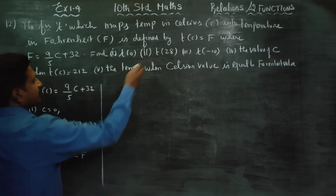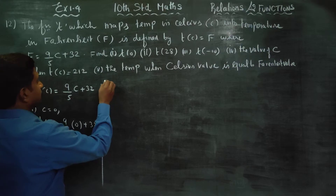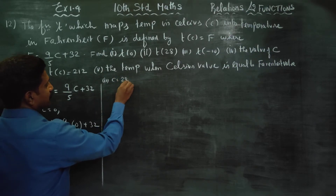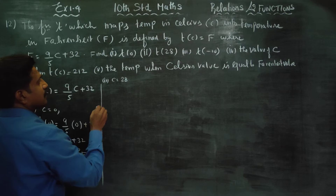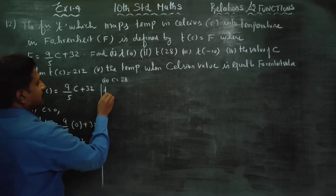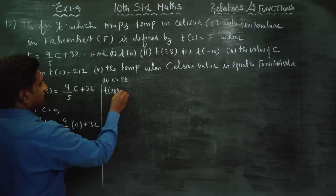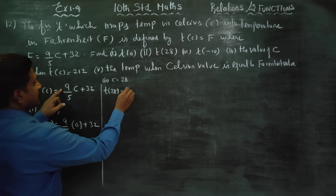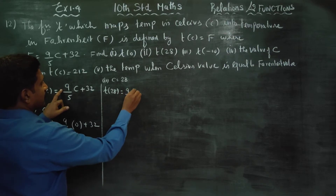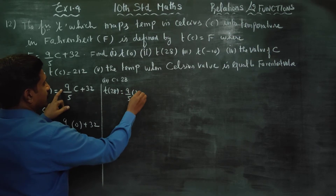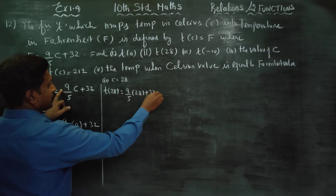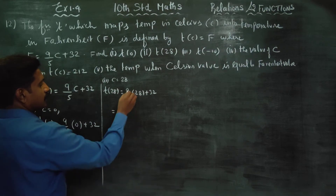For the second subdivision, T of 28 means C is equal to 28. So we apply the formula: 9 by 5 into 28 plus 32.